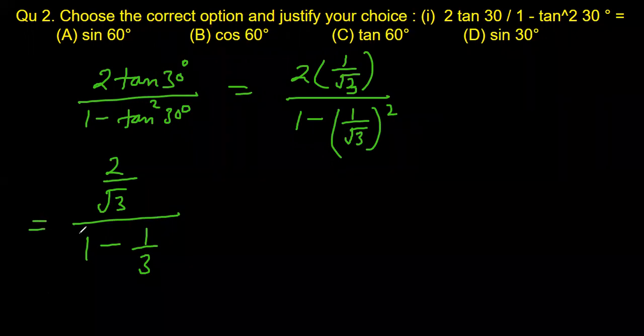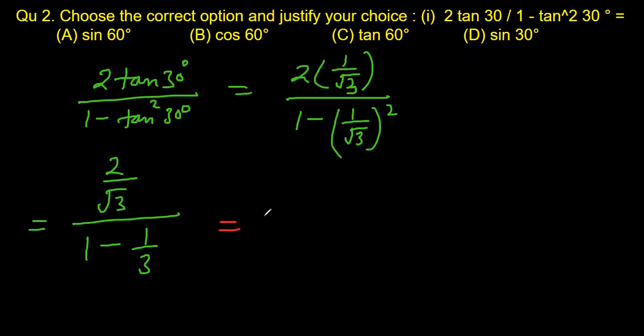So this can be further simplified as 2 by root 3, 2 divided by root 3, and this divided by, here LCM is 3, so 3 minus 1, 3 minus 1 would be 2 by 3.